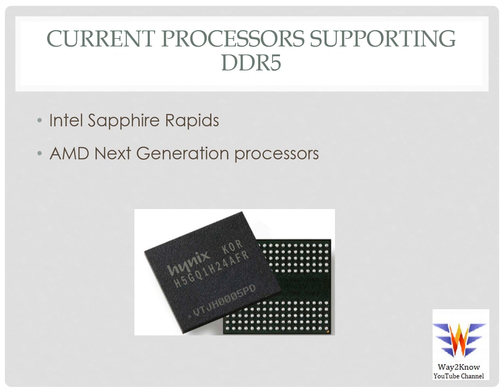Current processors supporting DDR5 include Intel Sapphire Rapids, which is reported to be supporting DDR5. AMD next-generation processors also look to be supporting DDR5. While these are projections from the respective processor vendors, we have to see what modules are going to support DDR5.